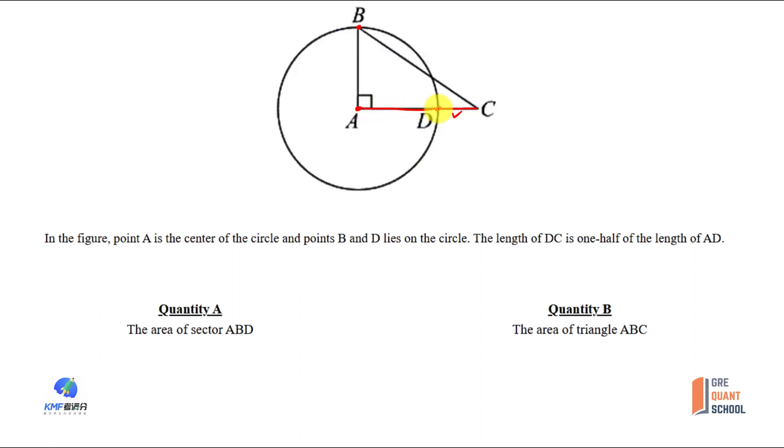AD length is 2, the length of the radius. So DC length is 1, AD length is 2. The radius of the circle from A is 2.